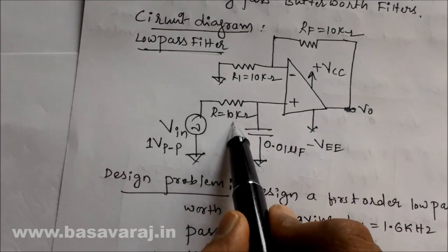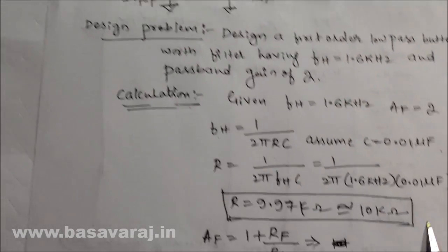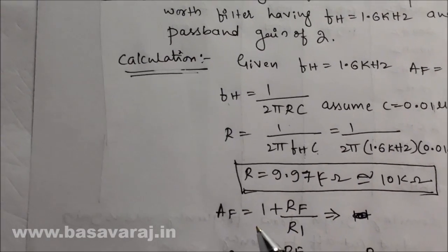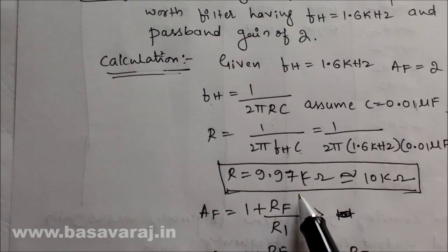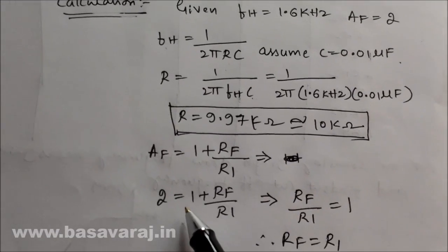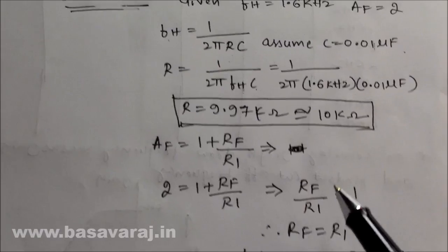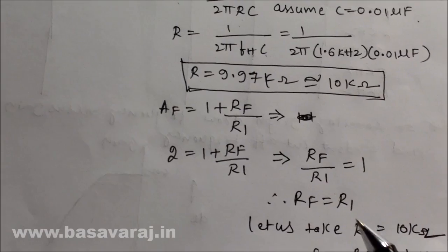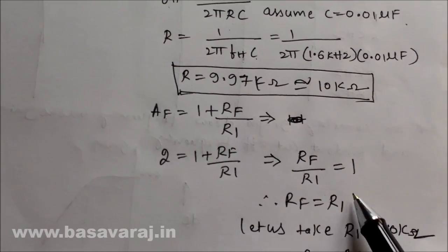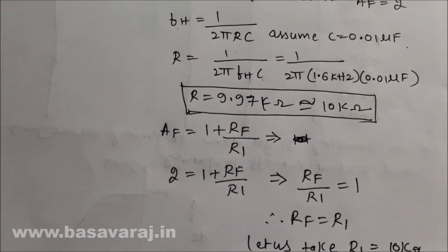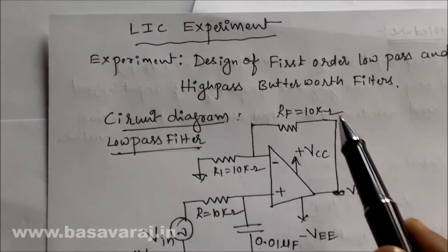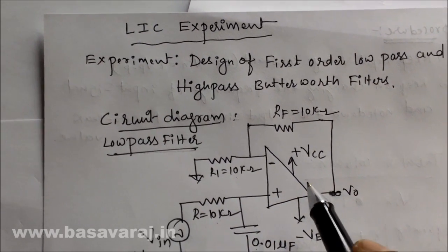For the gain, since this is a non-inverting op-amp configuration, the gain formula is AF = 1 + RF/R1. With passband gain AF = 2, we get RF/R1 = 1, meaning RF = R1. Taking R1 = 10 kilohms, both R1 and RF are 10 kilohms. So we use resistors of 10 kilohms each for R1 and RF.